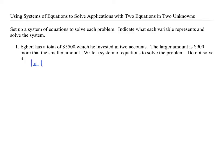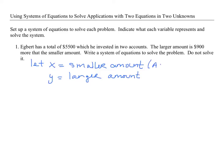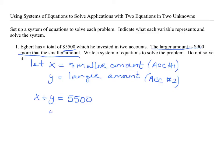I'm going to let X equal the smaller amount and Y equal the larger amount. We know he has a total of that amount of money, so if I add the amounts in those accounts it has to equal $5,500. The second sentence: the larger amount Y is equal to $900 more than the smaller amount. We are not going to solve the system, but this one is easily solved using substitution.